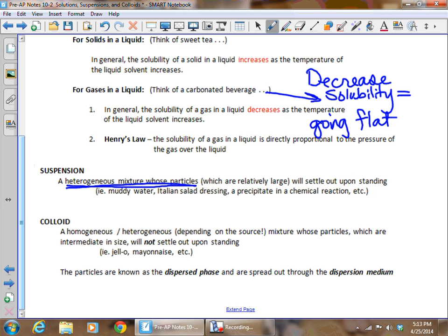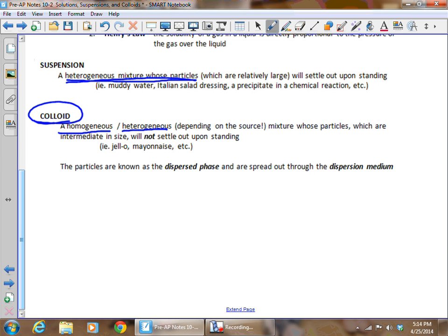There's a clear distinction between solutions and suspensions. The type of mixture in the middle is a little bit odd, and they have some cool different types of substances when we deal with colloids. It really depends on which textbook you're looking at. Some will tell you it's homogeneous, some heterogeneous. It's a mixture whose particles are intermediate in size and will not settle out upon standing. It's not the same as a solution. We refer to the dispersed phase, which is the stuff being mixed into the other material, and the dispersion medium, which is what that material is being mixed into.